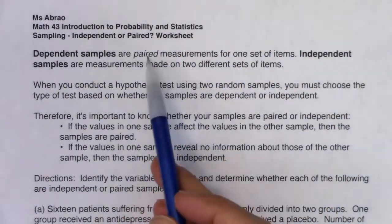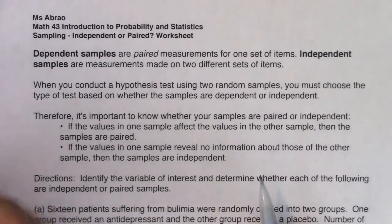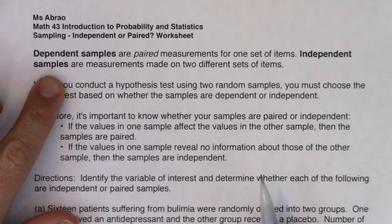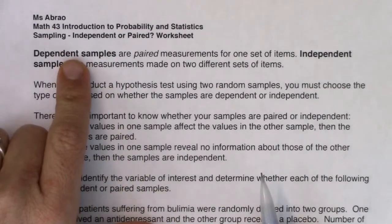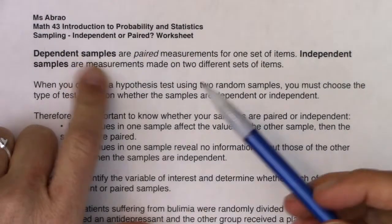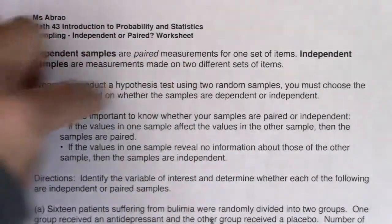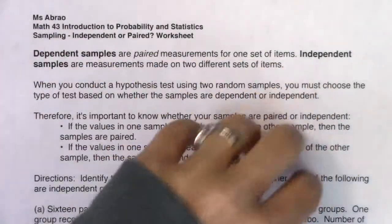Dependent samples are paired measurements for one set of items — meaning that for each individual or object in your sample, if you get two measurements from them, you will have dependent samples. Independent samples are measurements made on two different sets of items. In paired or dependent samples, there's some kind of connection between those measurements. In independent samples, the measurements have nothing to do with each other.